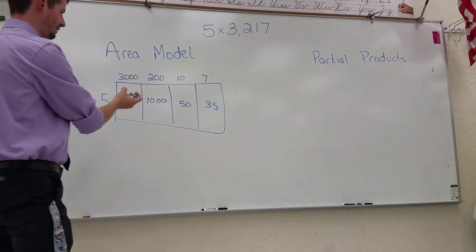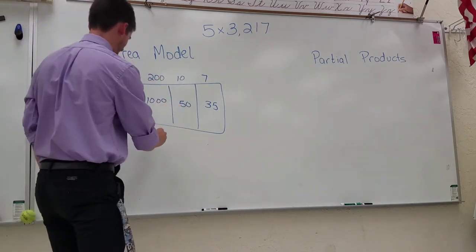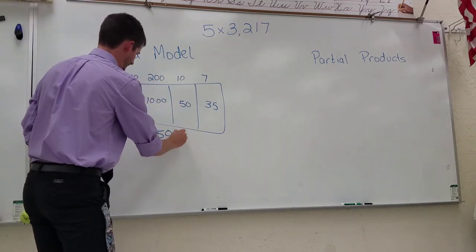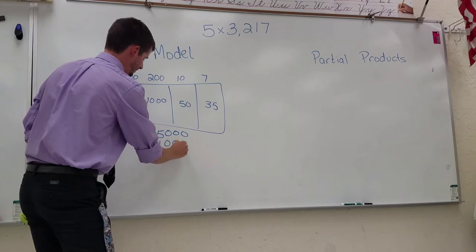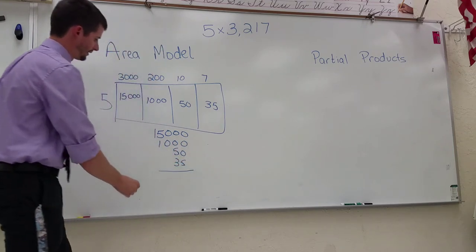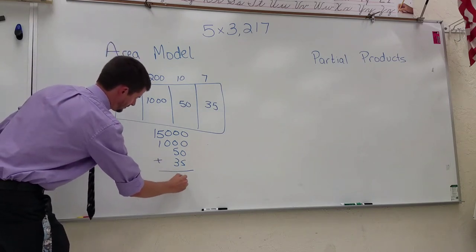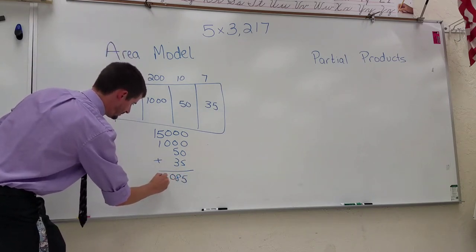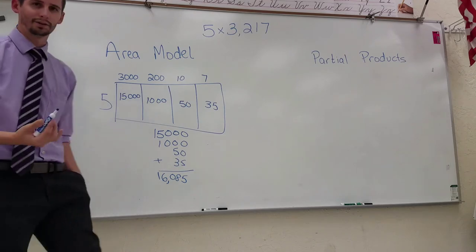Now when I add all these partial products up I'll get my product. So 15,000 plus 1,000 plus 50 plus 35. When I do all that I should get 16,085.